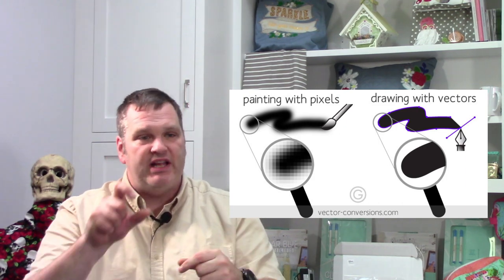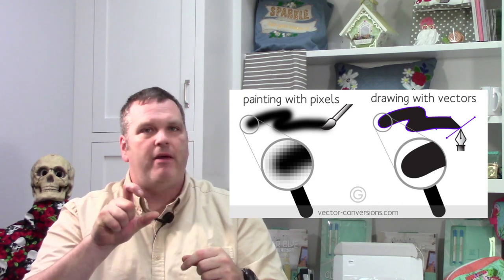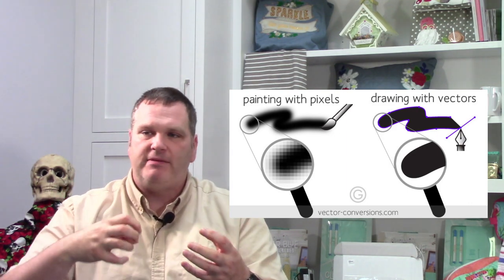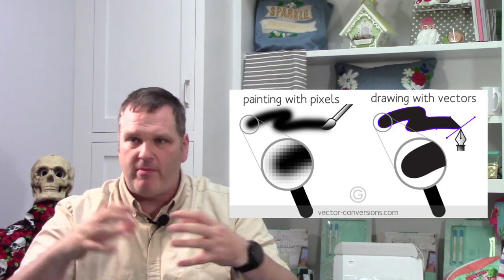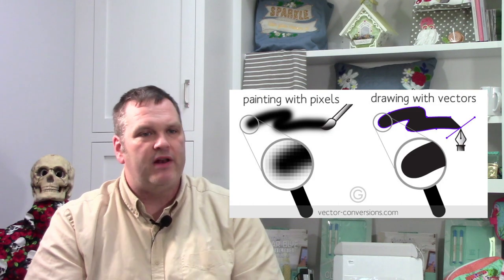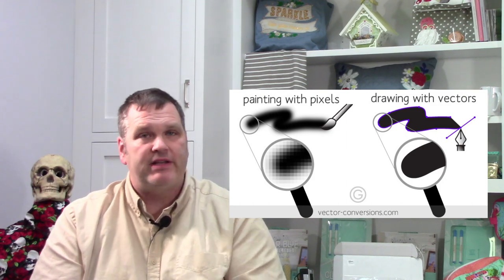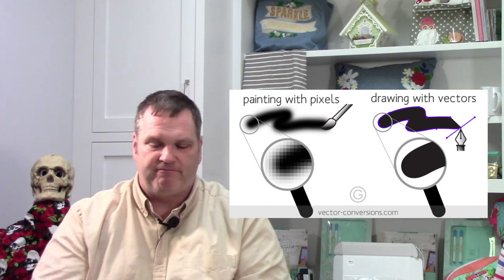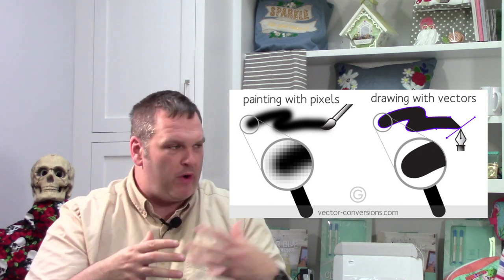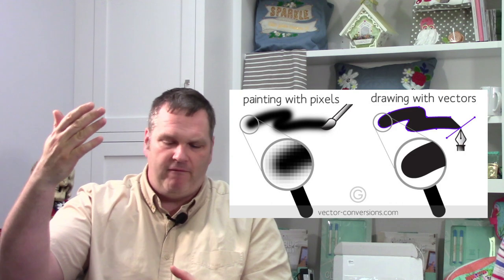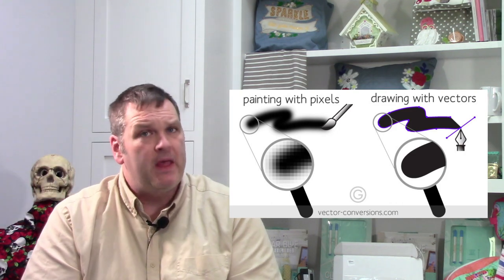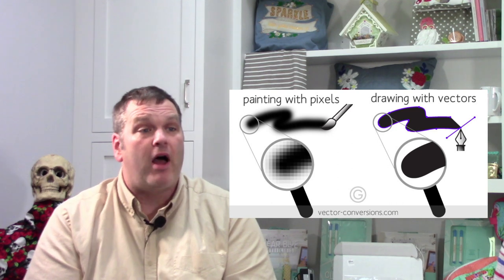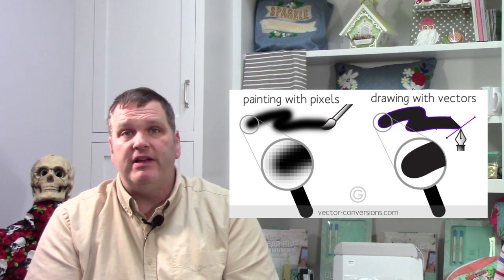The downside to a vector format is you can't do shading easily. If you're going to do shading, you have to write a mathematical equation for each individual area — saying this bit of red is going to be so many ratios. So what you'll often find with vector formats is they tend to be solid colors. If you look at old clip art, it's blue and red — it's not going to have much variation or shading.